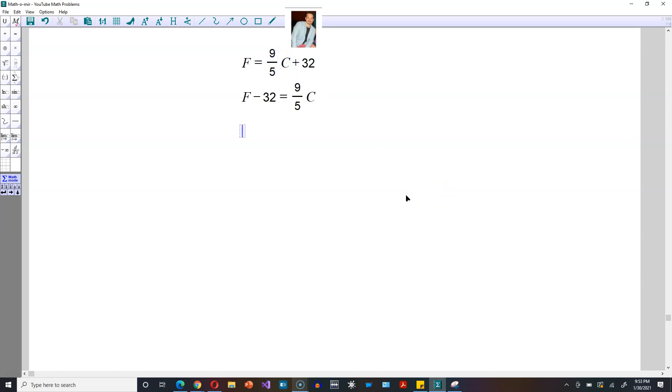And then you would multiply by 5/9, which is the reciprocal of 9/5. So it would look like the following, 5 divided by 9. And then here within parentheses, you would have F minus 32. Here you would have 9 divided by 5 times the reciprocal, 5 divided by 9, and then C.